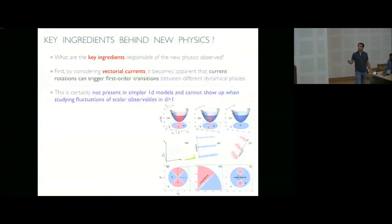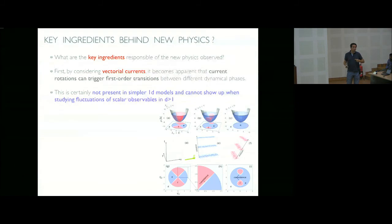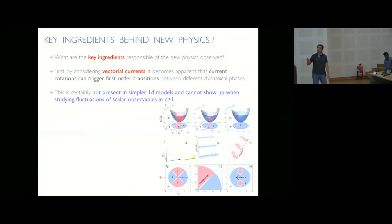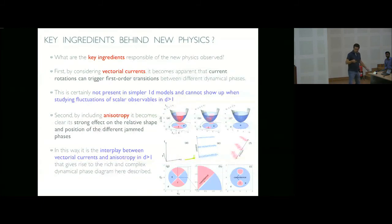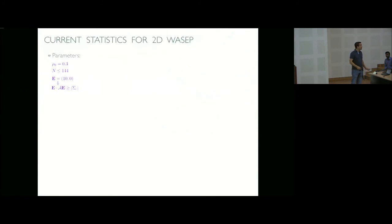The key ingredients giving rise to new physics are: first, vectorial currents — the current is a vector that can change in magnitude and rotate, and rotating the current triggers first-order DPTs between different dynamical phases, which is absent in 1D and in D > 1 with scalar observables. Second, anisotropy, which strongly affects the relative shape and position of the different jam phases. The interplay between vectorial currents and anisotropy gives rise to the new physics.